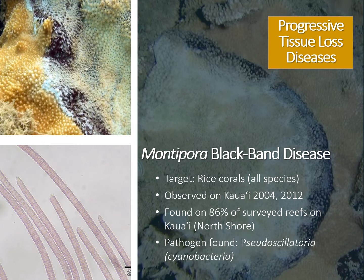Montipora Black Band disease is another less common type of progressive tissue loss disease and is the final specific disease covered in this training. This disease can target all types of rice corals, including red rice corals. It was first observed in Hawaii on Kauai in 2004, with a severe outbreak reported in 2012 along the North Shore. Researchers identified the lesions as Black Band disease, caused by a microbial consortium of filamentous cyanobacteria, sulfate-reducing bacteria, and sulfide-oxidizing bacteria. It is found worldwide, but in Hawaii has only been reported on Kauai. Because of the potentially rapid rate of spread, it's important that you report any possible case to the Eyes of the Reef Network.